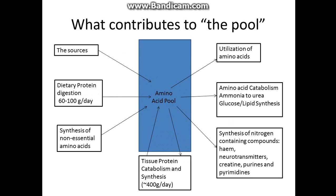So what goes into this pool? You get the dietary protein — just the protein you eat — the synthesis of non-essential amino acids (I'll discuss what essential and non-essential means in a minute), and tissue protein catabolism, which is the breakdown of proteins. Catabolism puts amino acids in, and synthesis takes them out. So that's about 400 grams a day.